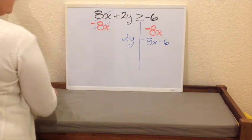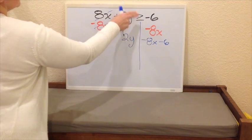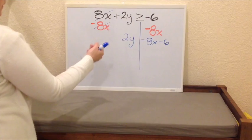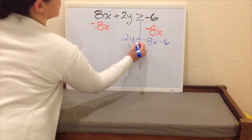At this point, since we have an inequality, we need to check. Have we done anything that will flip the inequality symbol? Which is multiply or divide by negative. In this case, we have not. So it remains in the same direction.